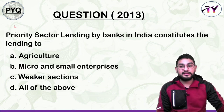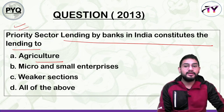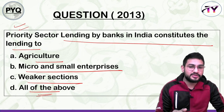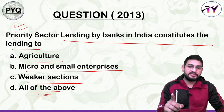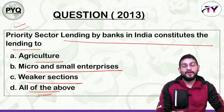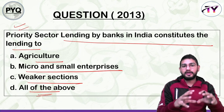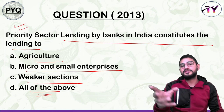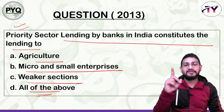In 2013, UPSC asked this question: 'Priority sector lending is given to whom?' Options: Agriculture; MSME — Micro and Small Enterprises; Weaker section; All of the above. Write your answer in the comment box. Why was priority sector lending introduced? If we understand the reason behind it, we understand the concept.